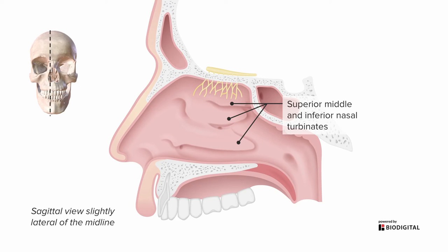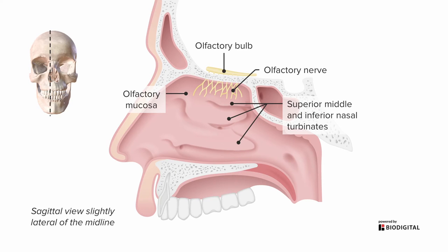The turbinates also help to direct air upwards to the top of the nasal cavity, where we have a special type of mucosa called olfactory mucosa — olfactory meaning smelling. So this area is a specialized area for smell. In this area, there are a bunch of tiny nerves that collectively make up the first cranial nerve, or olfactory nerve, which is the nerve of smelling. These tiny nerves pass through the skull to reach the cranial cavity at a special spot called the olfactory bulb, which has a tract that goes back to the brain to process the sense of smell.